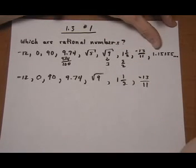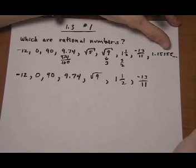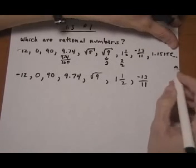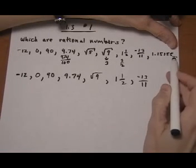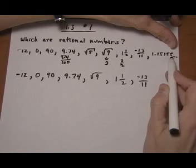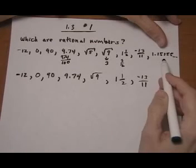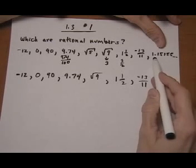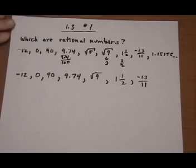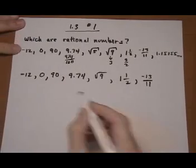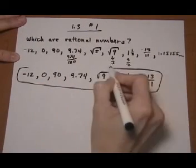And then this decimal — 1.15155 — I ran out of room, but the actual number in the MyMathLab question keeps going: 1555. What we have is a pattern, but it's not a repeating pattern. So that's not included in the rationals. So this list right here would be the rational numbers.